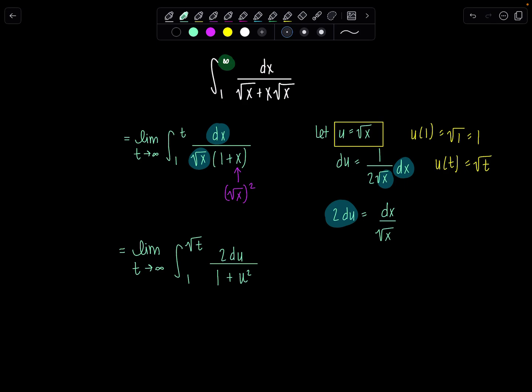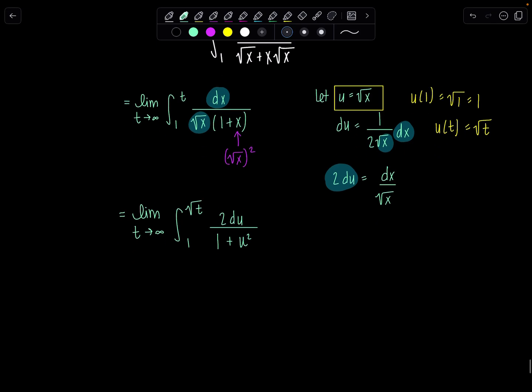Good. This one, you should just spot it and say, oh, I know. Antiderivative of 1 over 1 plus u squared is going to be tan inverse of u. And the 2 just comes along for the ride. So we've got limit t goes to infinity to tan inverse of u. And let's evaluate that from 1 to square root of t.